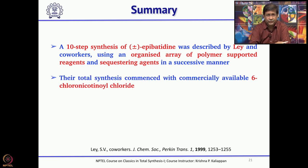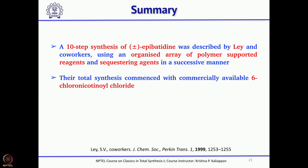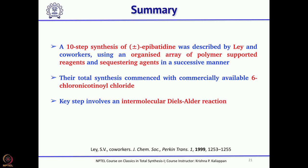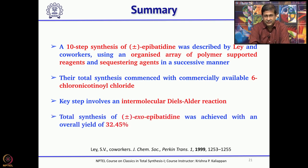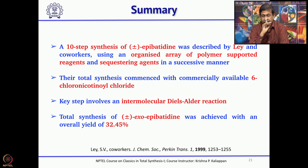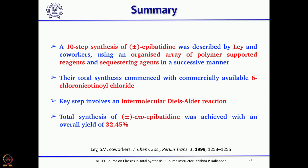Looking at this whole synthetic sequence, it involved 10 steps starting from commercially available 2-chloronicotinoyl acid chloride. The key step was an intermolecular Diels-Alder reaction between a nitroalkene and a 2-substituted butadiene. Overall, the synthesis was achieved in a yield of 32.45 percent — really significant, considering that a 10-step synthesis with 32.45 percent overall yield is commendable. More importantly, since the whole sequence involved many polymer-supported reagents, the number of chromatographic purifications was very limited.